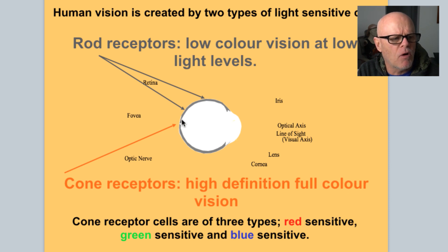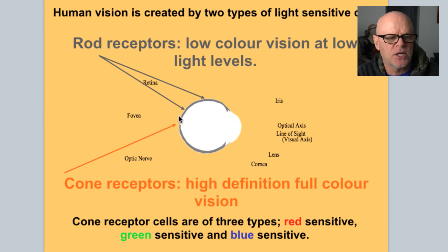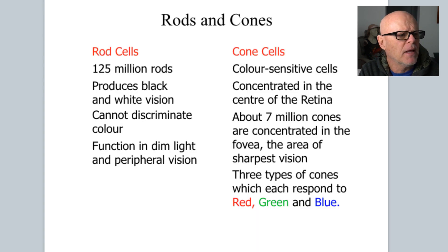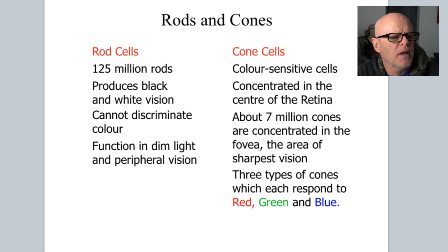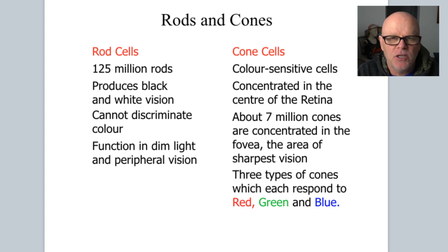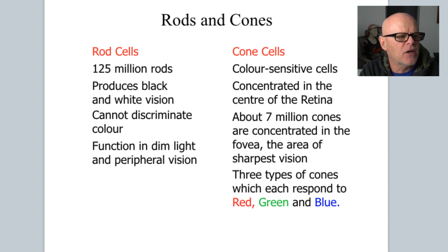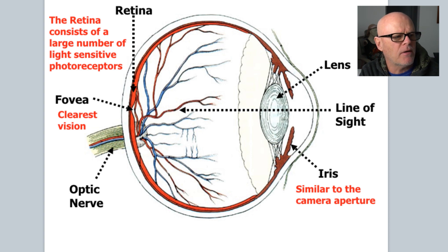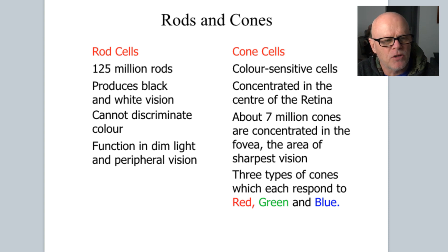The cones are at the back of the eye and they're used for your high colour definition. Your cone receptor cells are of three types: red, green and blue. You have roughly 125 million rod cells, which produce black and white vision and function in dim light and peripheral vision. Your cone cells — you have roughly seven million of them — are the things that see red, green and blue, and they are mostly concentrated in the fovea at the back of the eye. I'll actually prove this to you later in a test.